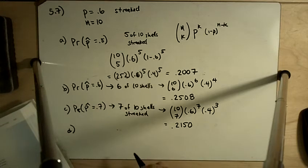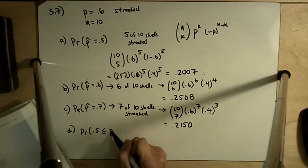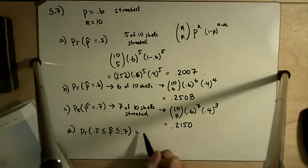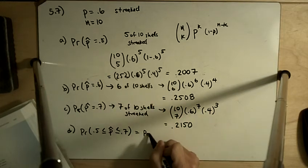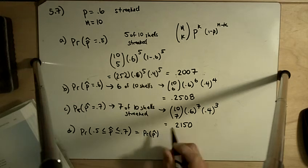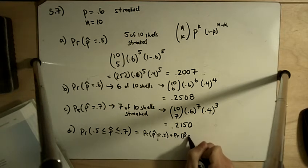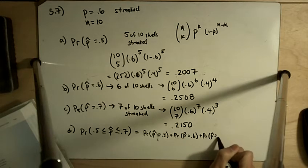Part D asks us, what is the probability that 0.5 is less than or equal to P hat less than or equal to 0.7? And that is going to be the probability that P hat equals 0.5 plus the probability that P hat equals 0.6 plus the probability that P hat equals 0.7.